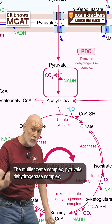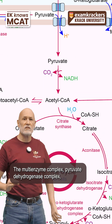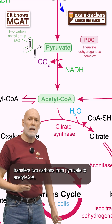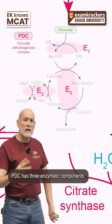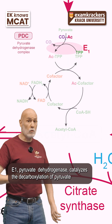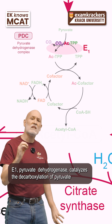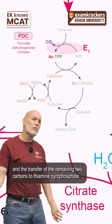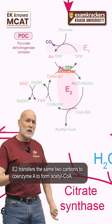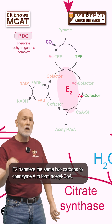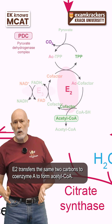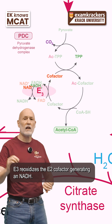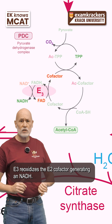The multi-enzyme complex pyruvate dehydrogenase complex transfers two carbons from pyruvate to acetyl-CoA. PDC has three enzymatic components. E1 pyruvate dehydrogenase catalyzes the decarboxylation of pyruvate and the transfer of the remaining two carbons to thiamine pyrophosphate. E2 transfers the same two carbons to coenzyme A to form acetyl-CoA. E3 reoxidizes the E2 cofactor, generating an NADH.